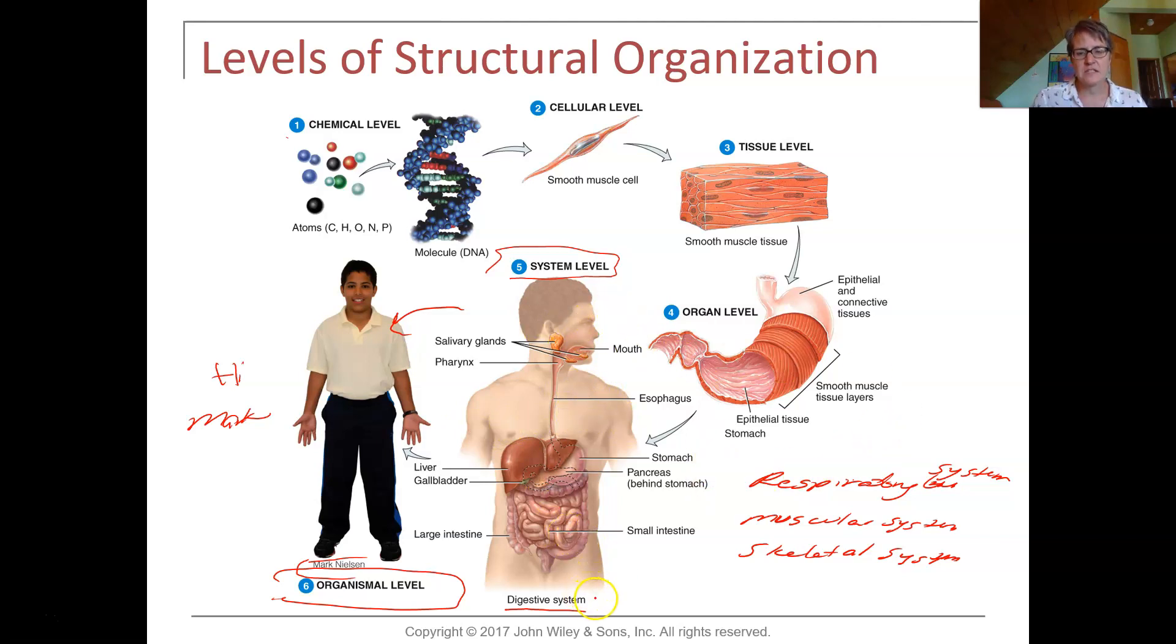If I take a system like the digestive system, it consists of many different organs working to a common function. So because they all work to a common function, those organs together make up the system. If we look at it just as an organ and we stick with the digestive system, well we have the stomach, the esophagus, the small intestine. There's a whole slew of organs associated with the digestive system.